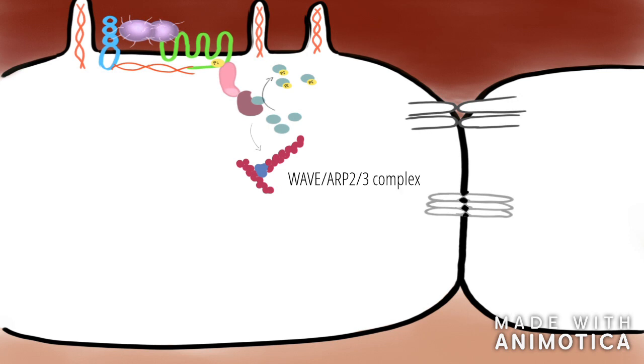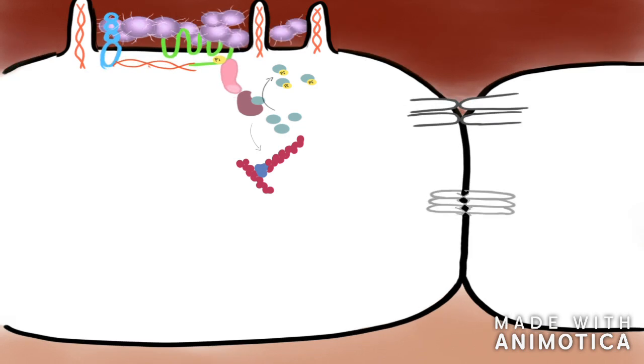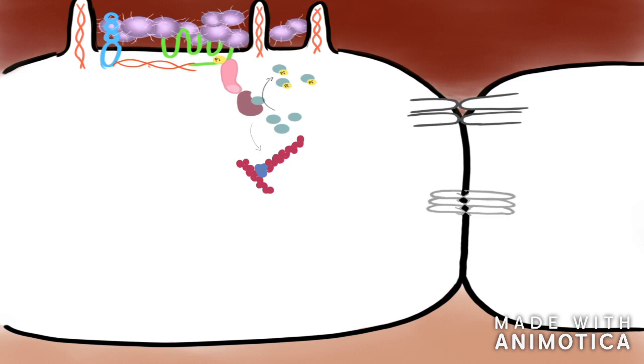Nucleation of actin through the WAVE-ARP complex and facilitation of arrangement of actin into cortical actin filaments through phosphorylation of cortactin. Cortactin plays a key role in the formation of filopodia-like protrusions on the apical side of the cell. These protrusions protect the bacteria from being washed away by the bloodstream, and thus promote adhesion and accumulation of Neisseria on the endothelium.